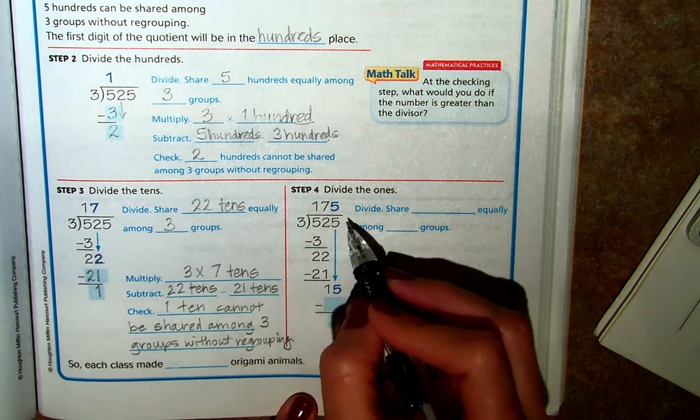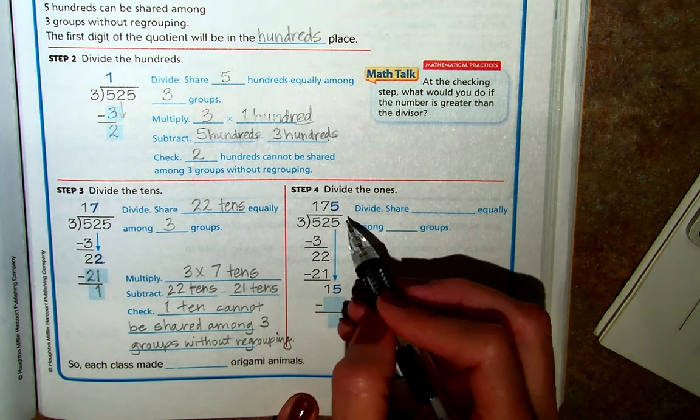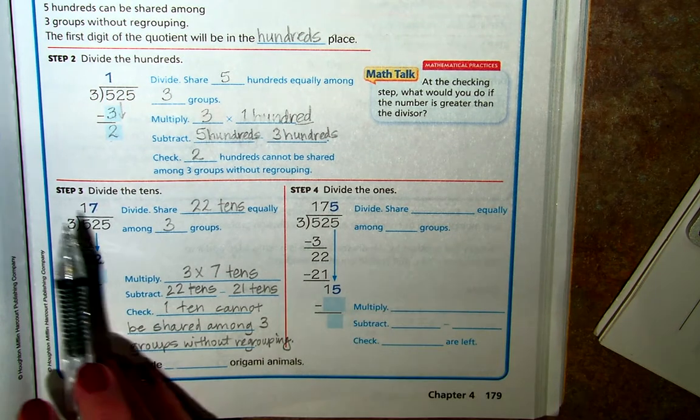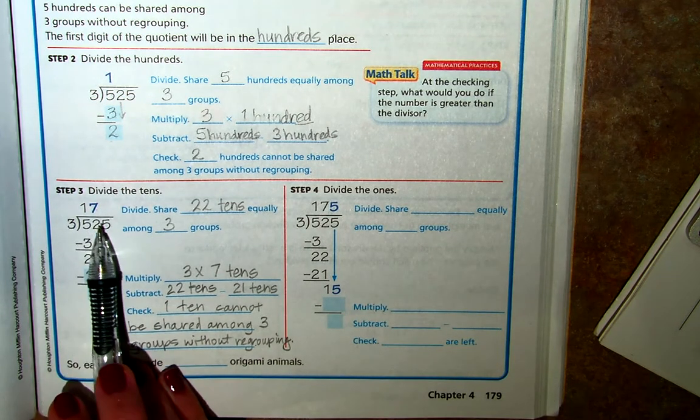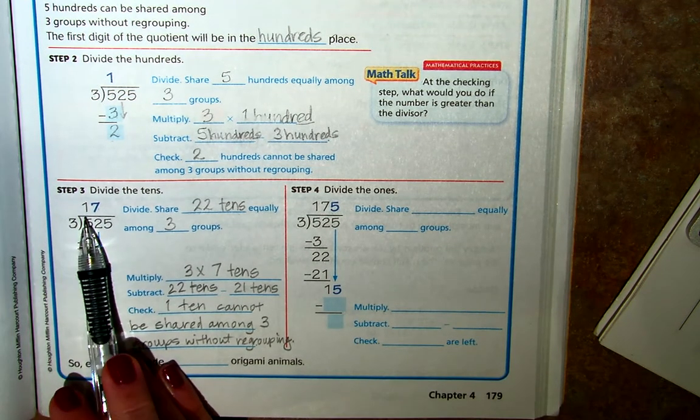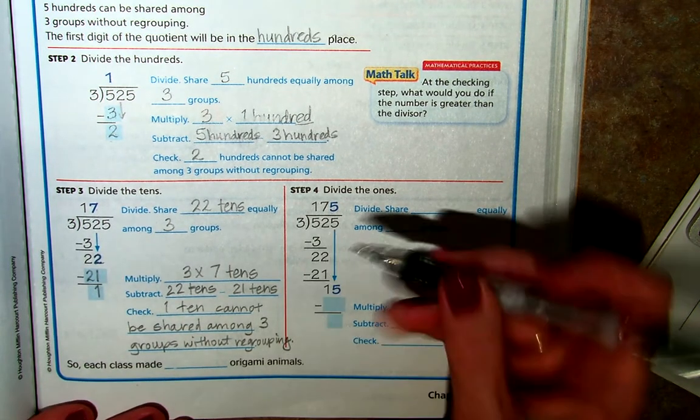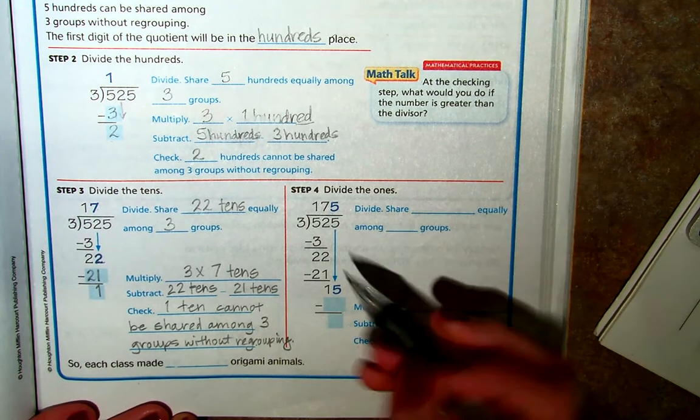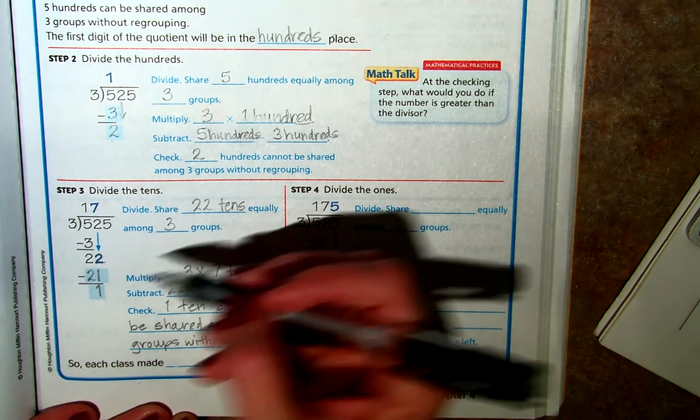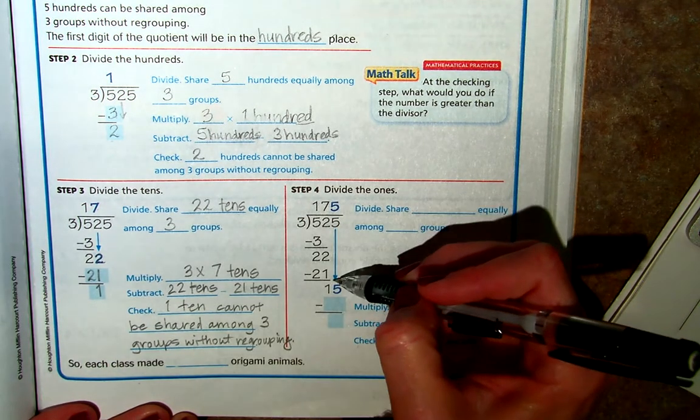Then we're going to move over to step 4, and we've got to divide our ones. So we have our hundreds place, we have our tens place taken care of, and now we need to take care of our ones place.